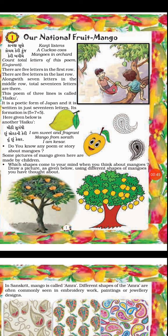Now, this three-line poem is called a haiku. Yeh jo three line ki poem hai, isse hum haiku kehte hai. The first line has five letters, the second line has seven letters, and the third line again has five letters. And it is a poetic form of Japan.